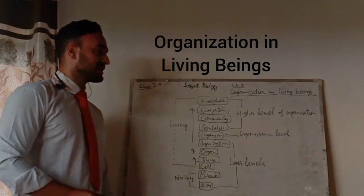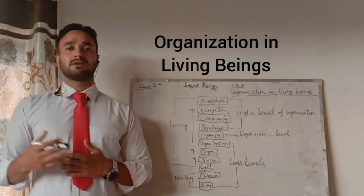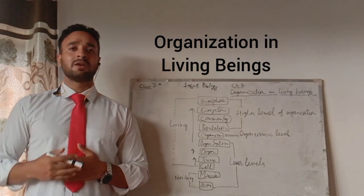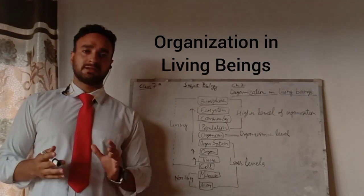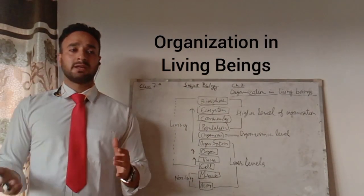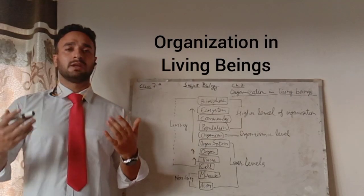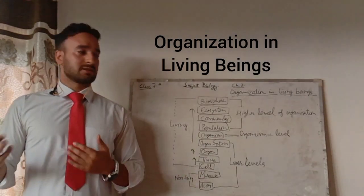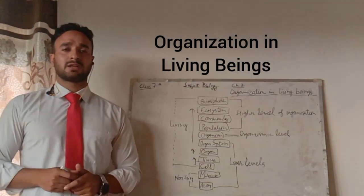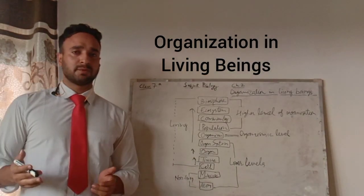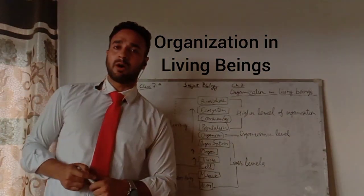Now let's move to the organismic level of organization. These organ systems — in human beings we have the digestive system, respiratory system, excretory system, and reproductive system. When all these systems work together for the same purpose in a coordinated manner, they make up the organism. We are a coordinated function of many organ systems working together, and this is known as the organismic level of organization.